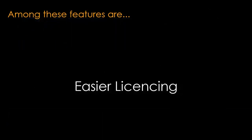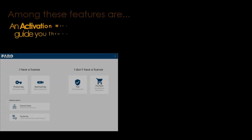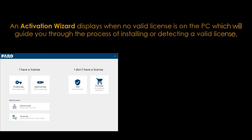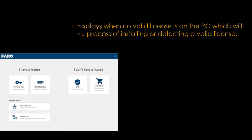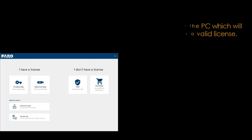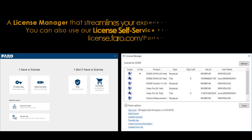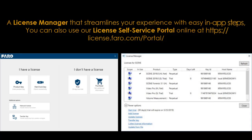Among these features are easier licensing. An activation wizard displays when no valid license is on the PC, which will guide you through the process of installing or detecting a valid license. A license manager streamlines your experience with easy in-app steps.